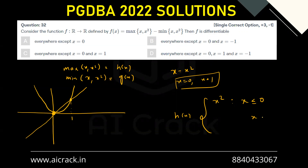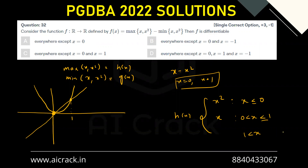For 0 < x ≤ 1, y = x is the maximum value, so h(x) = x. And for x > 1, y = x² is again the maximum. So we have plotted the graph and made a piecewise function for max(x, x²).